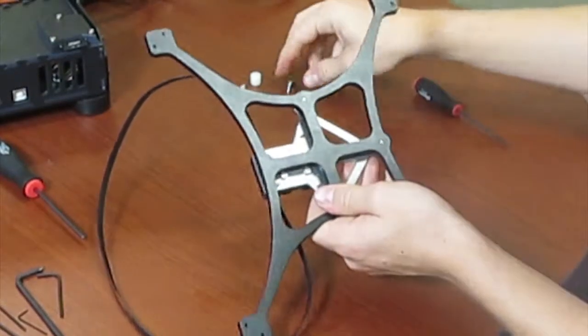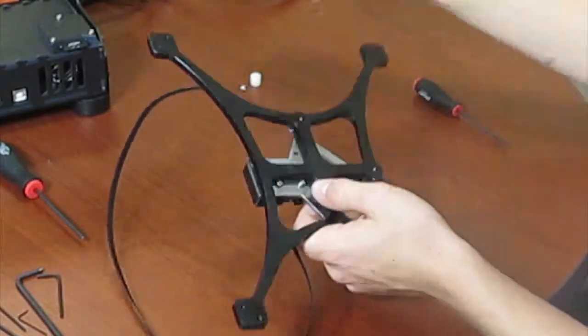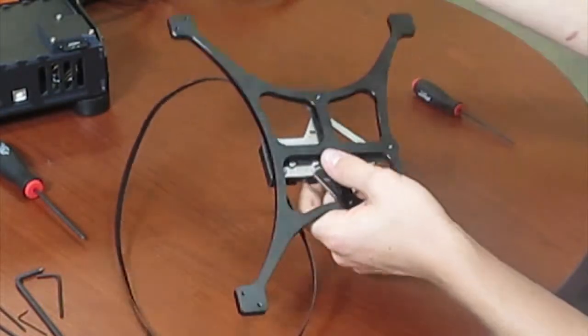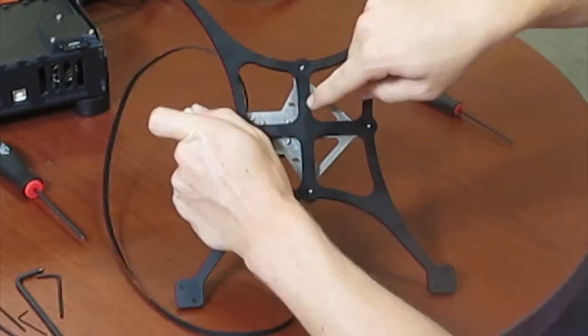So those are all now attached. Next, using an M3 by 16, you're going to attach an end stop that will trigger the limit switch when the bed is in its maximum position. This will go in the slot right here.